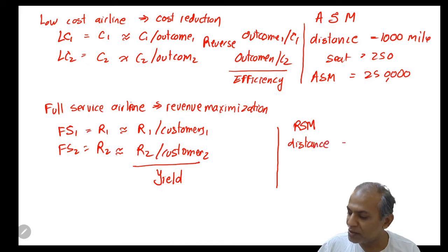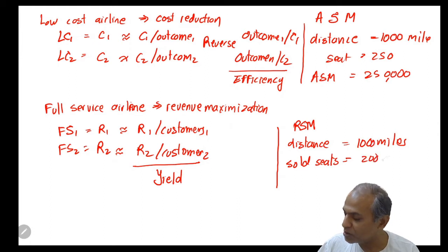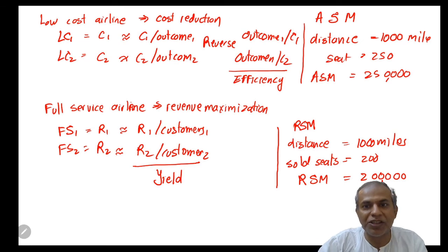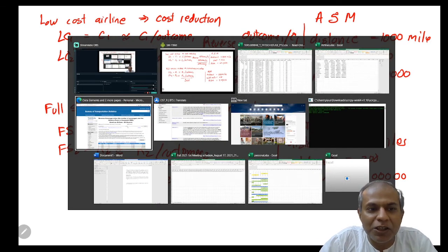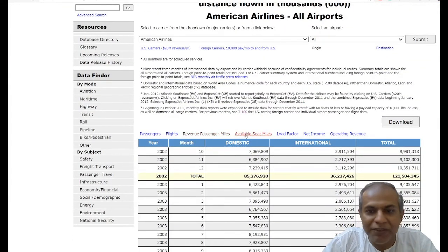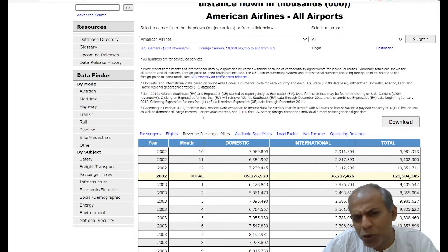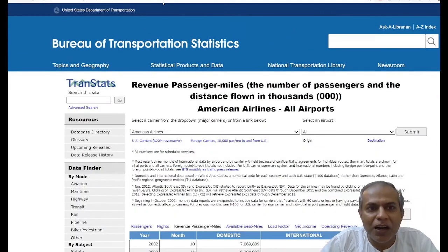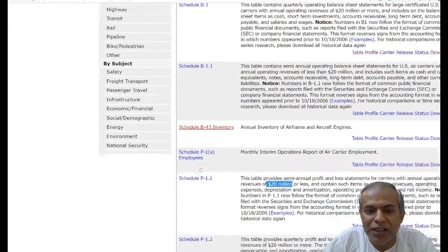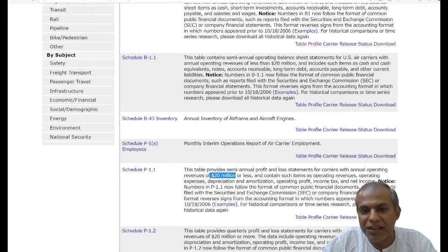So I use this data from the Bureau of Transportation Statistics page, which has a ton of information. This is information I have: American Airlines, I have their revenue passenger mile, available seat mile. I can change the airline and get whatever, and I'm going to choose the year 2017 which is a normal year. I can go to another page where on this Schedule P1 I find the profit, loss, expenses, etc. for all the airlines.